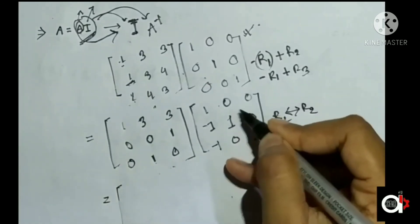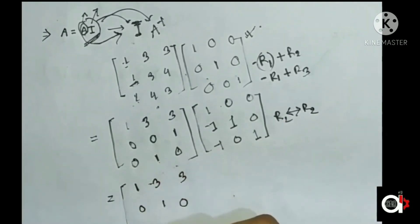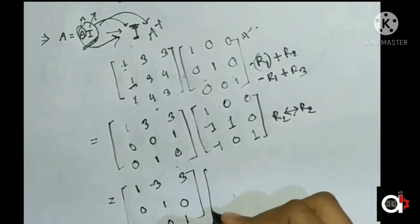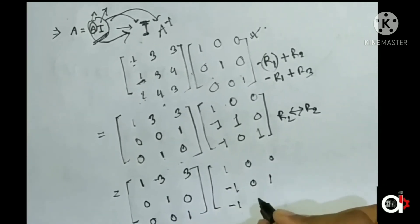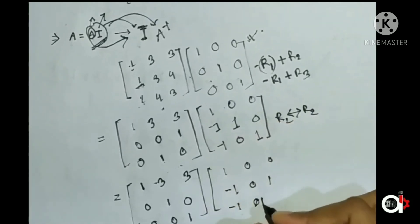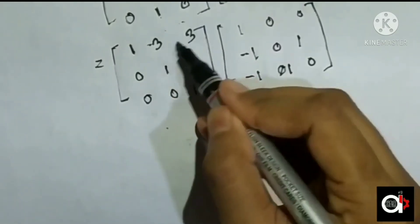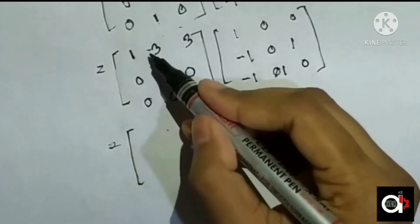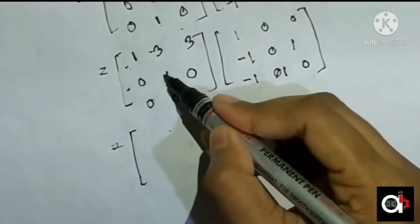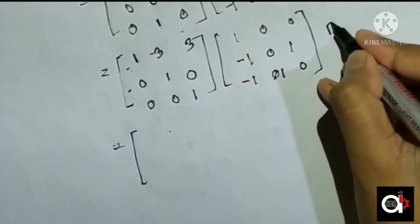After row exchange (swapping second and third rows), the A matrix becomes: row 1 is [1, 3, 3], row 2 is [0, 1, 0], row 3 is [0, 0, 1]. Then applying further row operations: for position (1,2), we apply R2 into minus 1 plus R1 to eliminate the element at that position.